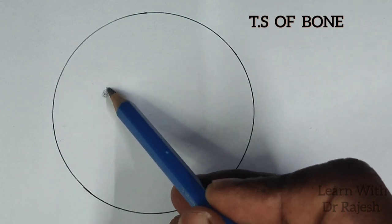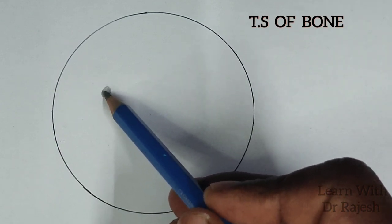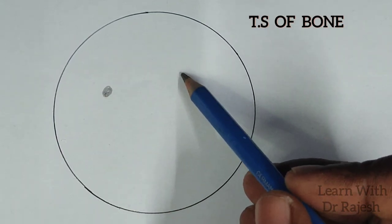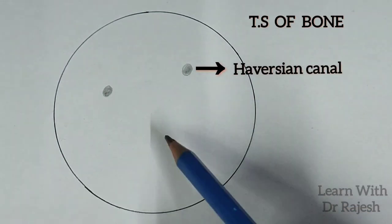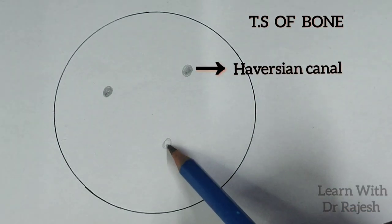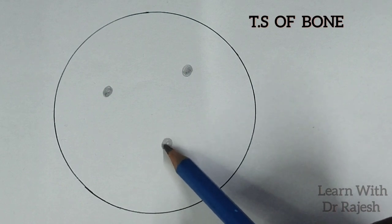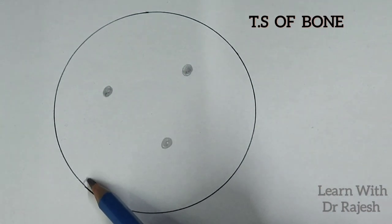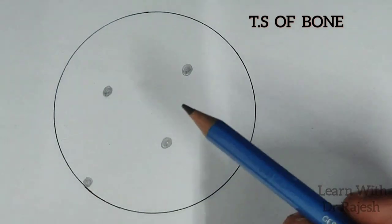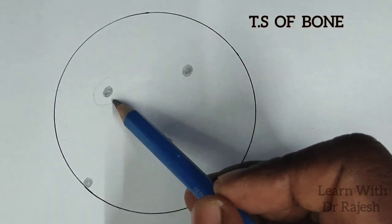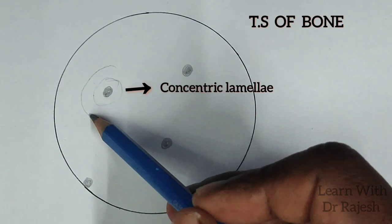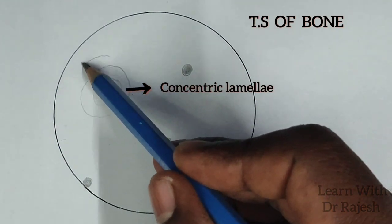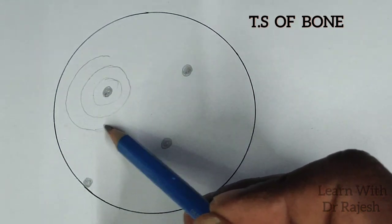The structural and functional unit of bone is called an osteon. The osteon has a central Haversian canal, which is what we are drawing with black dots. Surrounding these black dots will be lamellae, arranged in a concentric manner. Between these lamellae will be the osteocytes.